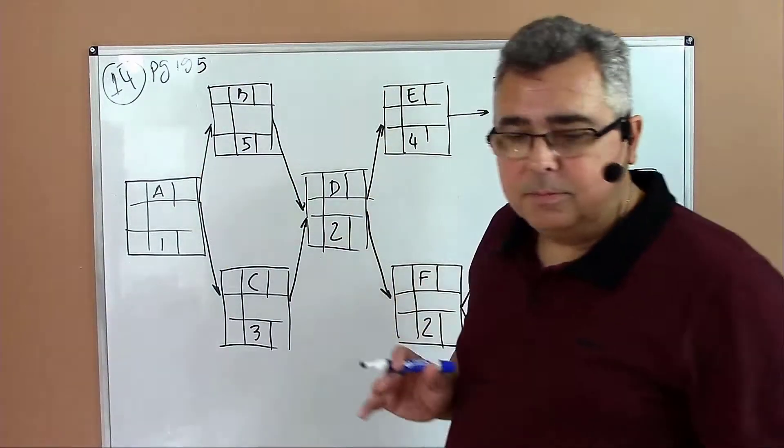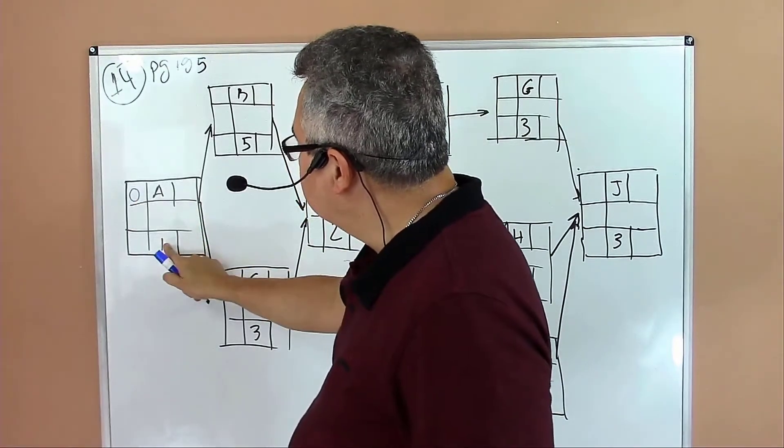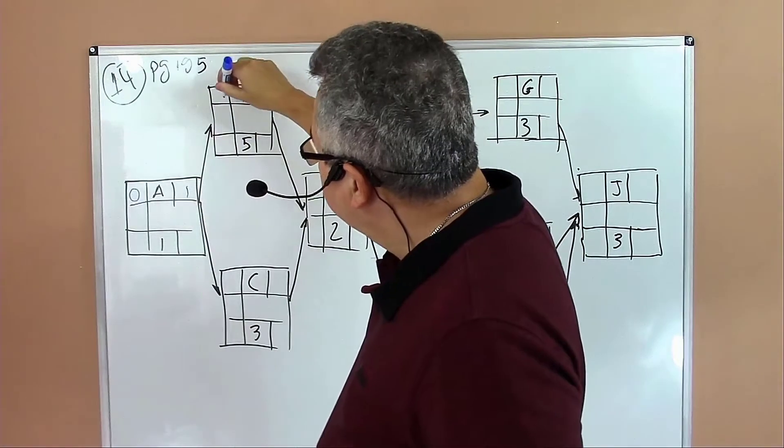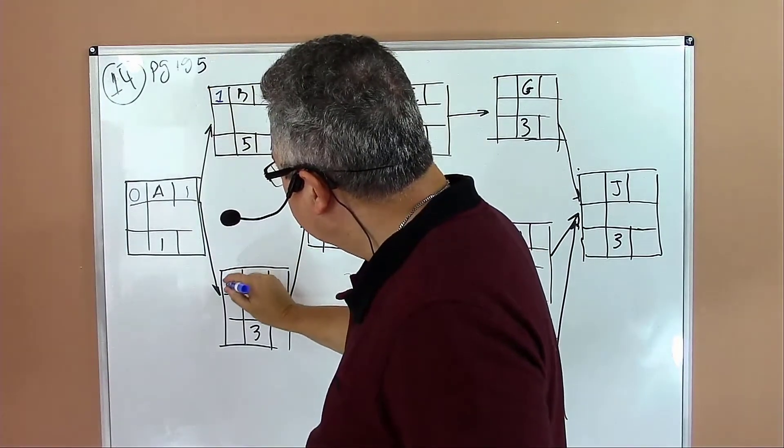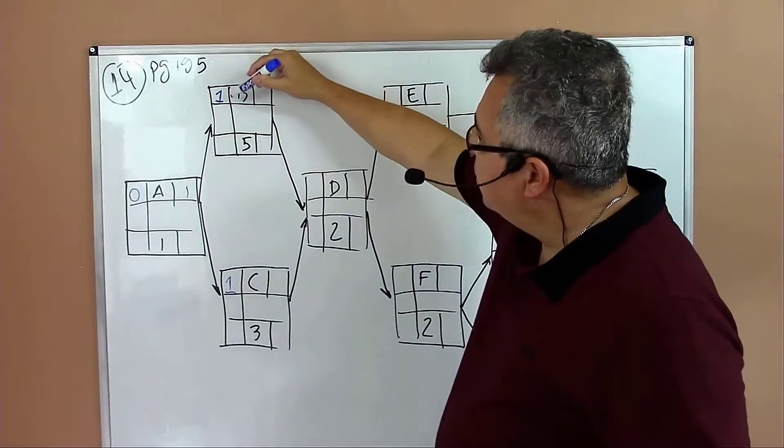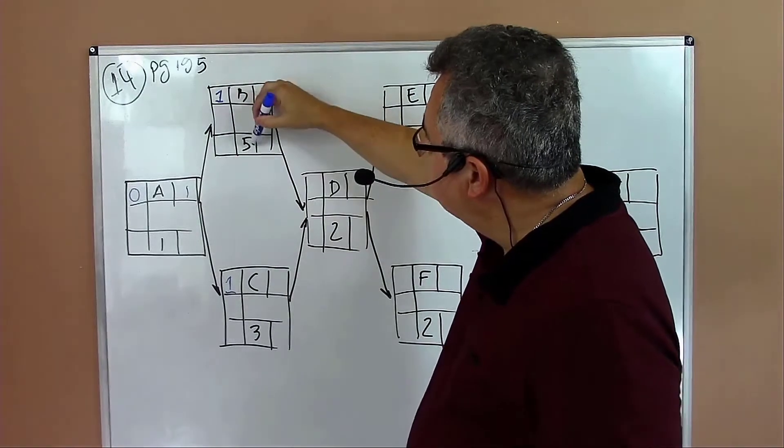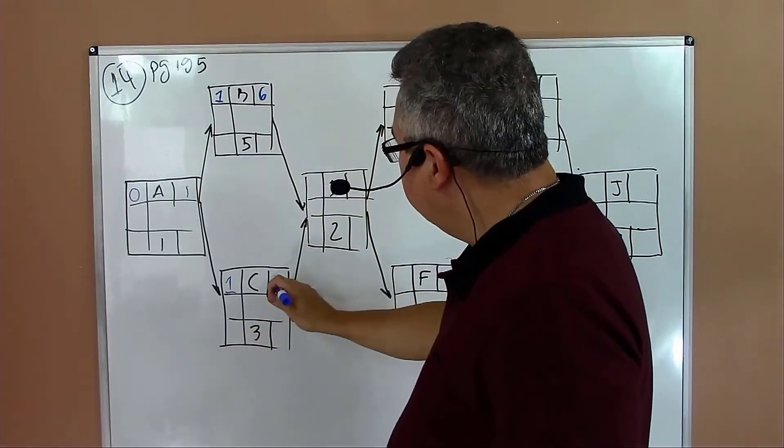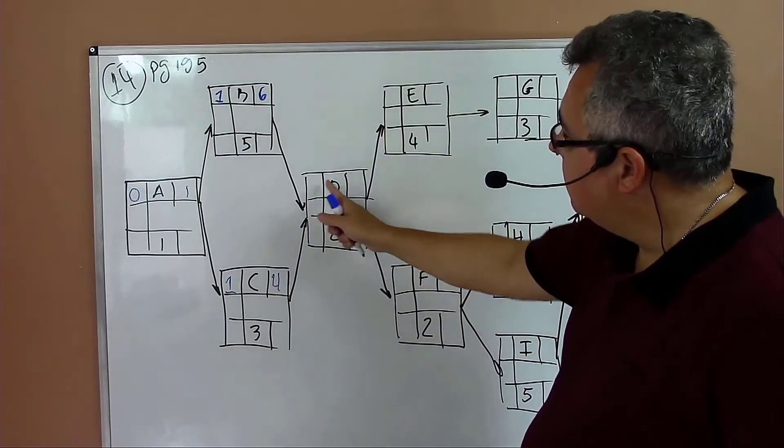Let's start the computation. Zero, so you have zero plus one equals one. Then take one in the forward path. We move that to the following next activities, then we compute. So we find the early start for activity B and activity C.